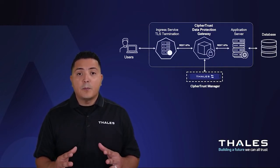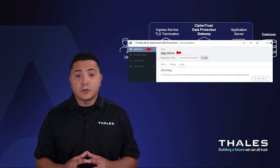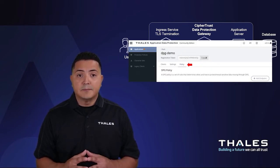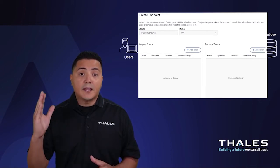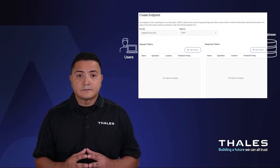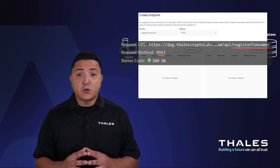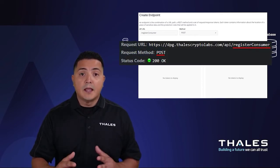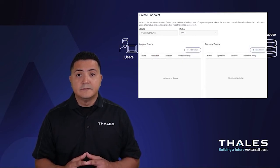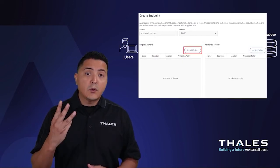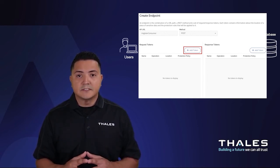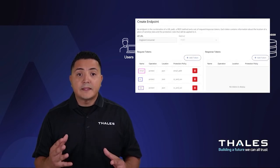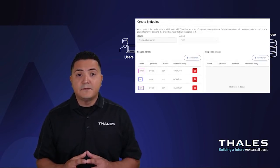Once that is done, I can go back to where I added the application earlier, and under the policy tab for that application, I'm now going to add two new endpoints. The first one will be used to protect the data as it is sent from the client to the application. I'll start by specifying the URL path after slash API, along with the HTTP method of the request. Next, I'll add three tokens to encrypt three different fields based on what I've identified as PII under the request token section. Keep in mind that the names given to the tokens need to match the names of the fields that I want to protect.